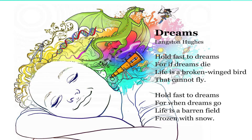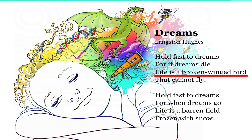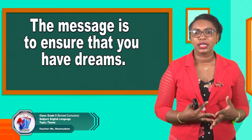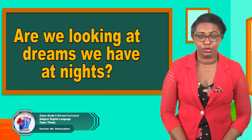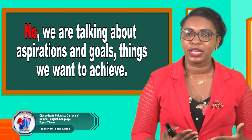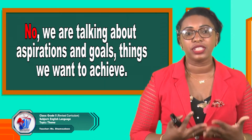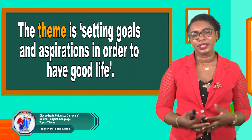Let's analyze this poem to figure out the theme. We see the title is 'Dreams' and the word 'dreams' is used repeatedly — but is that the theme? Looking at the literary devices: in stanza one, line three, we see the comparison of life to a bird with broken wings. In stanza two, life is compared to a barren field. The message is to ensure that you have dreams — not dreams at night, but aspirations and goals, things you want to achieve. The theme is: setting goals and aspirations in order to have a good life.